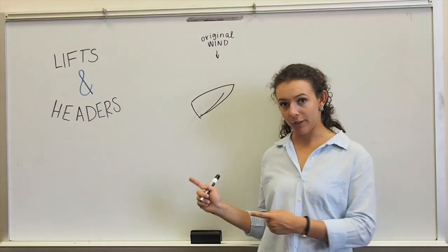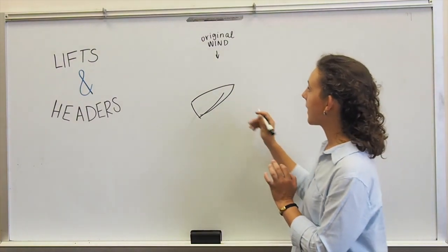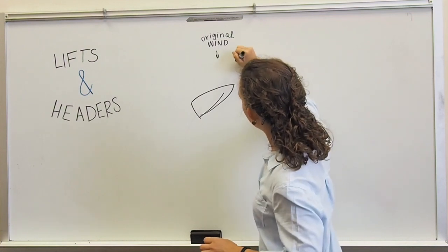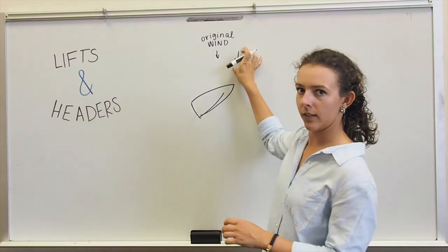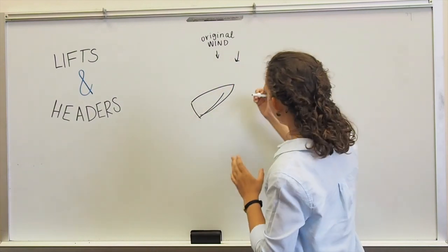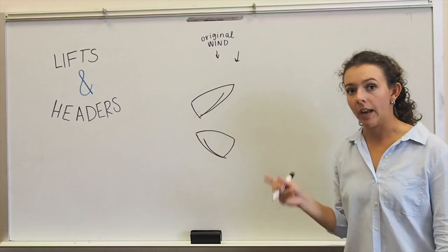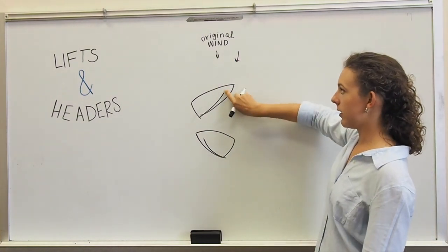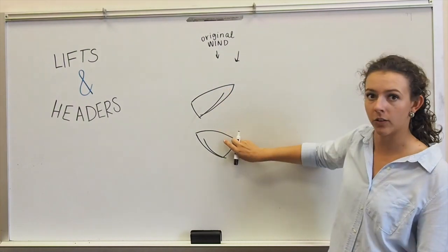Now I want to look at the relationship between headers and lifts. So this is our original wind direction. If we get a shift to the bow of the boat, it's now coming like this. Remember we said it was going to force the boat to head away. But let's say we have a boat on the opposite tack, and this wind shift to this boat is a shift to the bow, but to this boat is a shift to the stern.